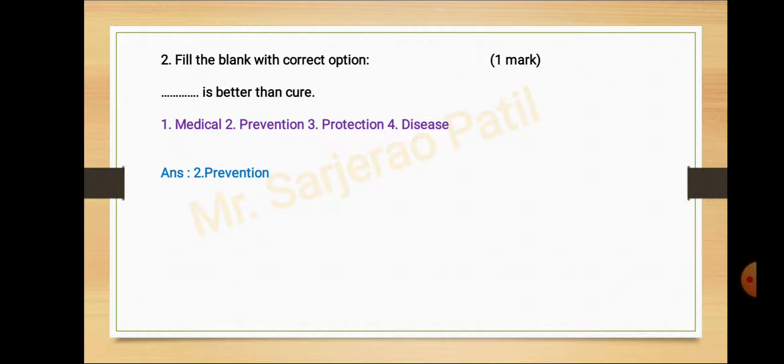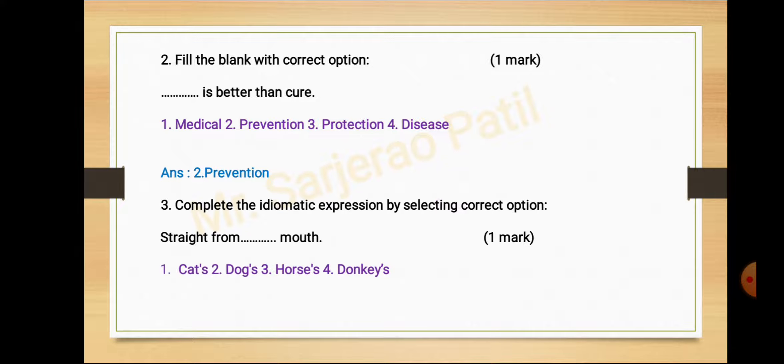Look at the third activity, complete the idiomatic expression by selecting correct option. Straight from dash dash mouth. Option number one cats, second dogs, third horse, fourth donkeys. Option number third horse, hit answer hai.